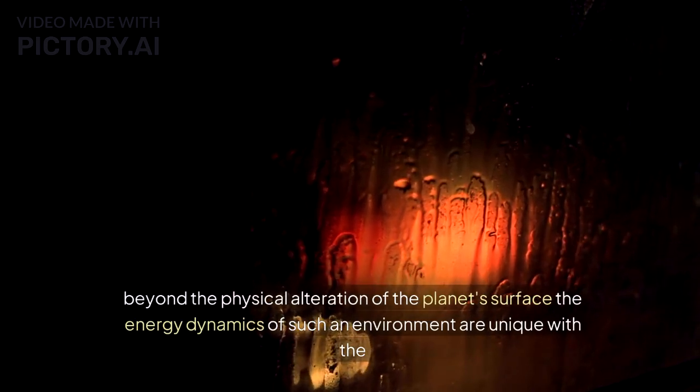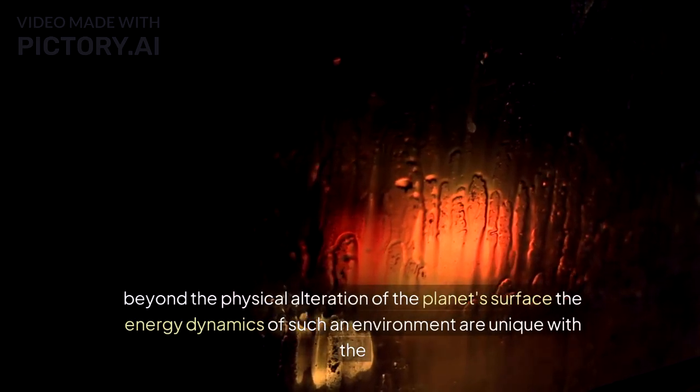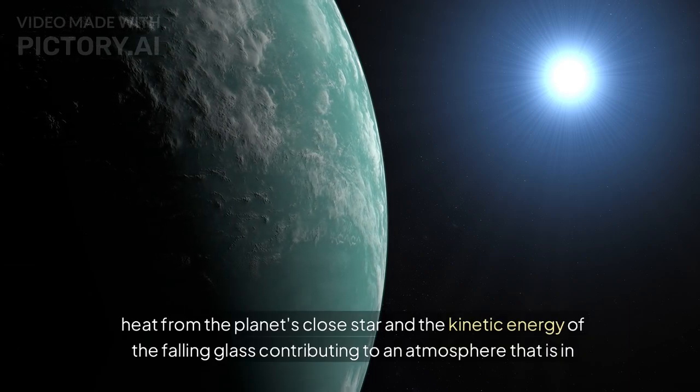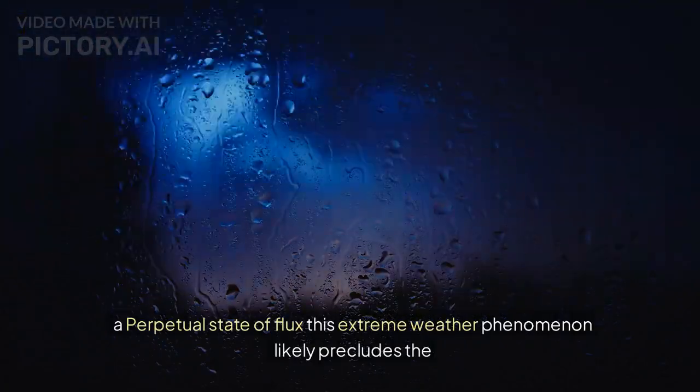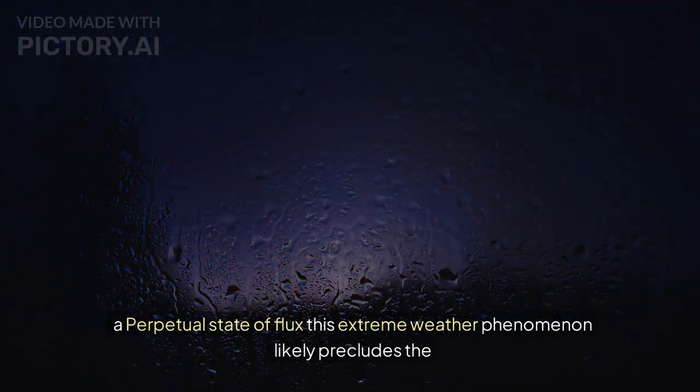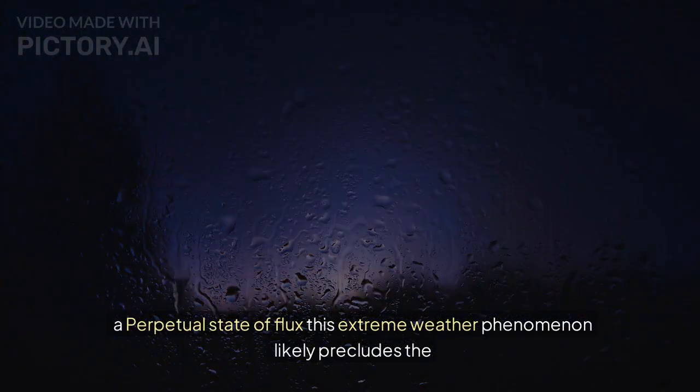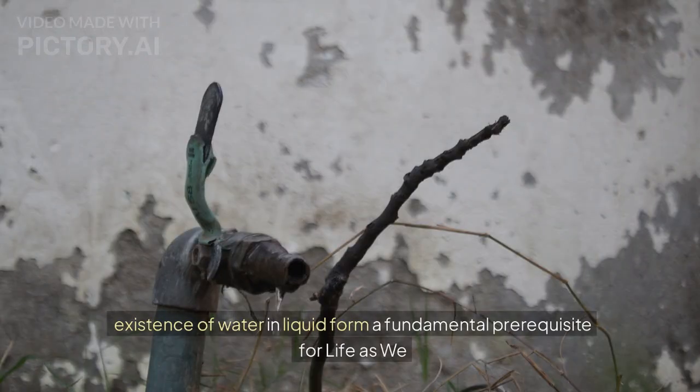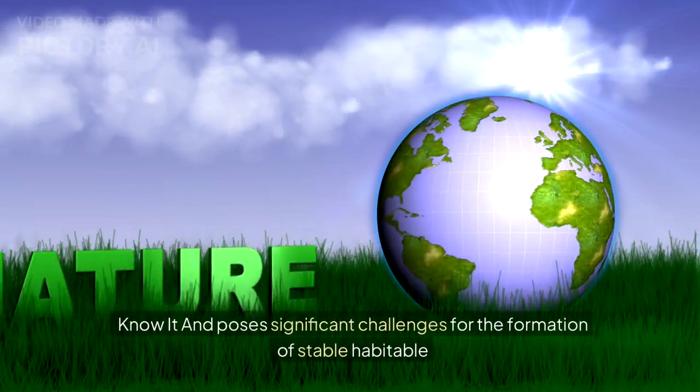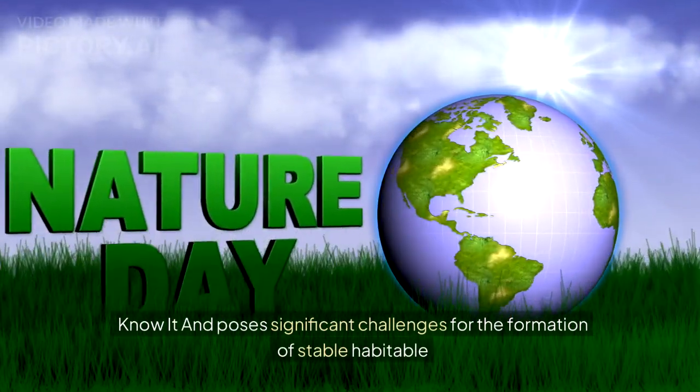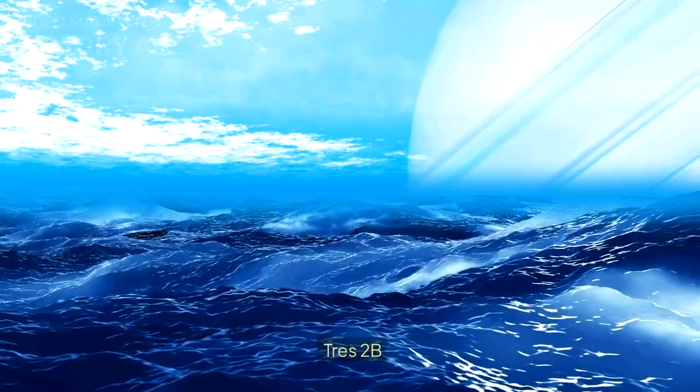The impact of glass rain extends beyond the physical alteration of the planet's surface. The energy dynamics of such an environment are unique, with the heat from the planet's close star and the kinetic energy of the falling glass contributing to an atmosphere that is in a perpetual state of flux. This extreme weather phenomenon likely precludes the existence of water in liquid form, a fundamental prerequisite for life as we know it.